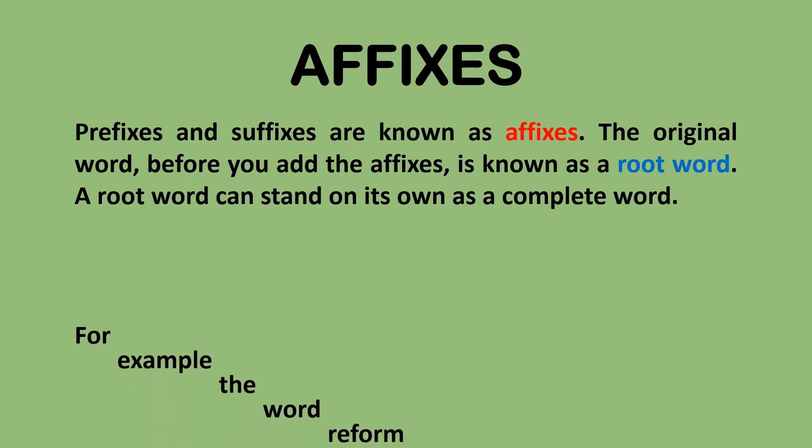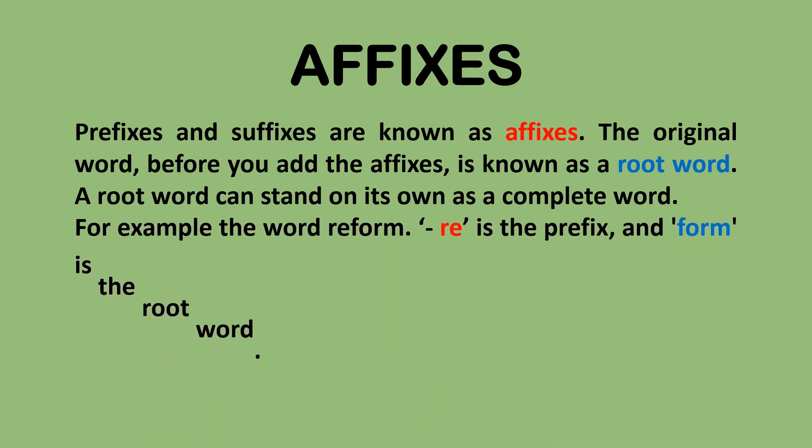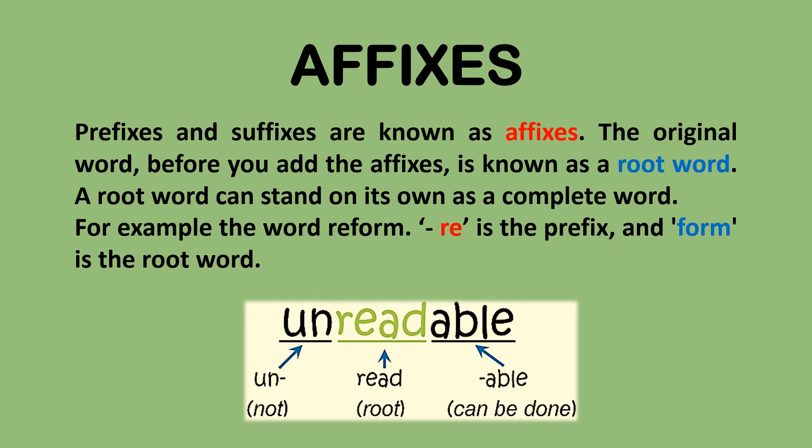For example, the word 'reform' — 're' is the prefix and 'form' is the root word. Similarly, we have the word 'unreadable', where 'un' is the prefix and 'able' is the suffix, with 'read' as the root word.